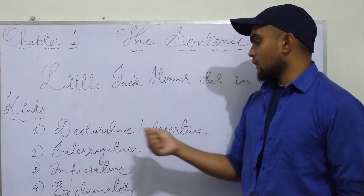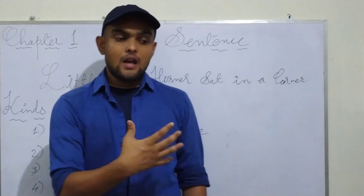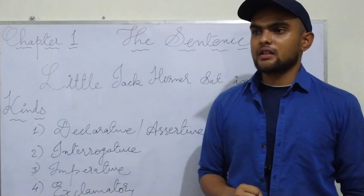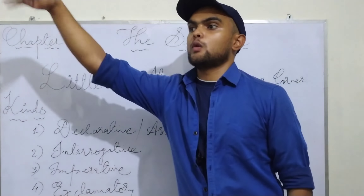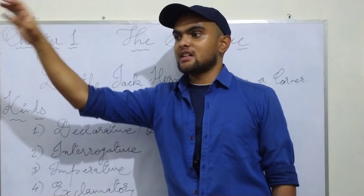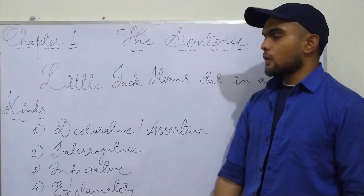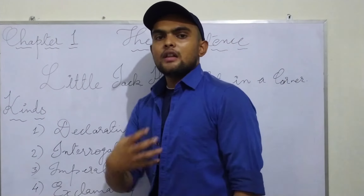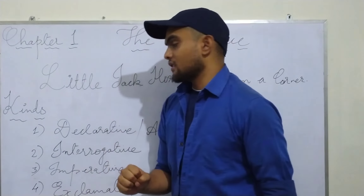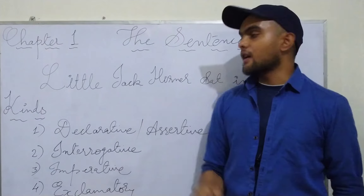Declarative and assertive — when we give a declaration about something, like 'Humpty Dumpty sat on a wall' — that's the assertion, a declaration we are giving. That is about declarative sentences. And what about interrogative? Interrogative — question sentences are called interrogative sentences. 'Where do you go?' 'How are you?' — that type is interrogative.